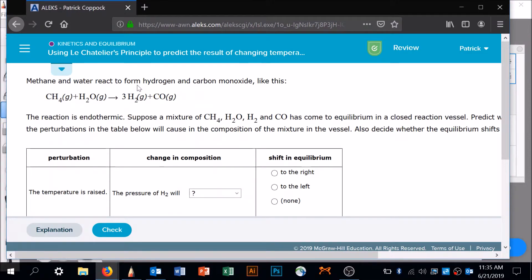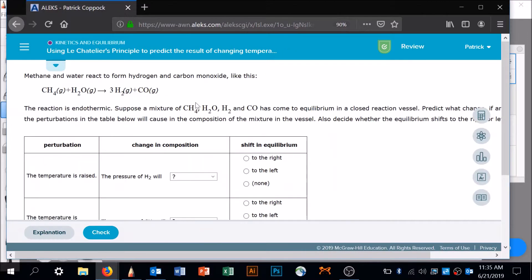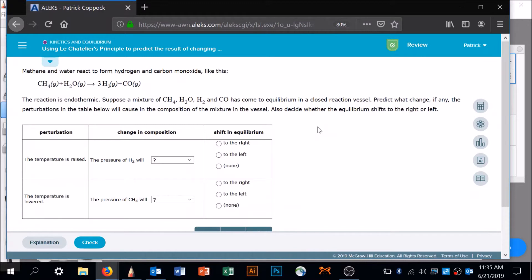Methane and water react to form hydrogen and carbon monoxide like this: CH4, H2O, H2, and CO. It's two moles of gas over here, four moles of gas over here - three plus one. I don't think that's going to do with it, but let's look. The reaction's endothermic. That means we've got heat over here. If it's endothermic, we've got heat here.